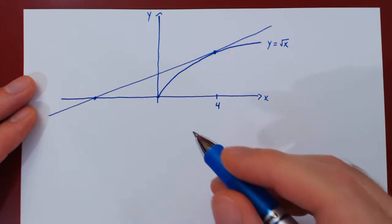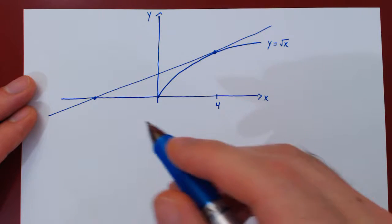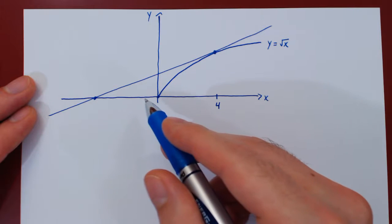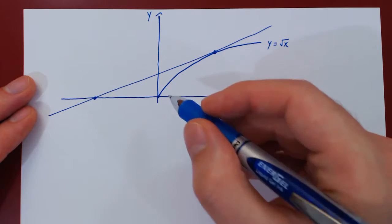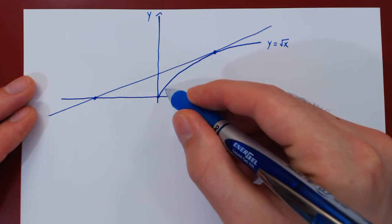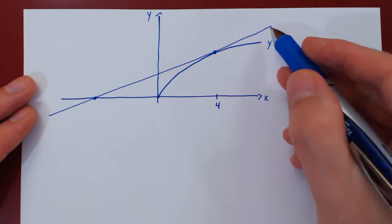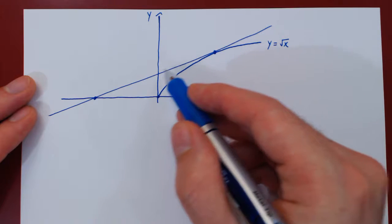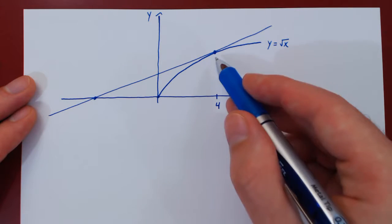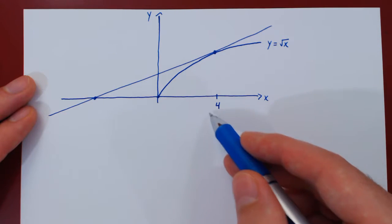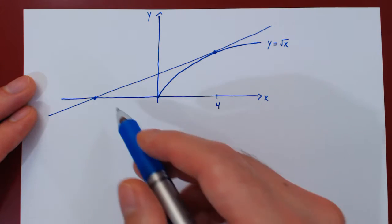In this video, we want to find the area of the region bounded by the x-axis, the curve y equals root of x, and the tangent line to root of x at x equals 4.